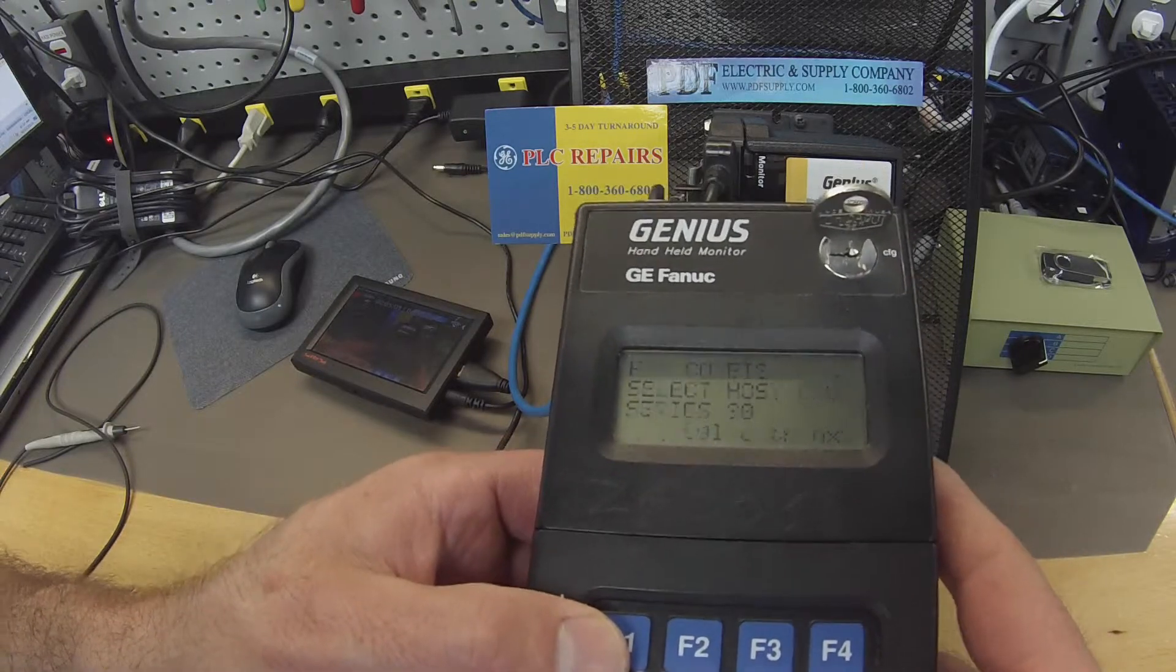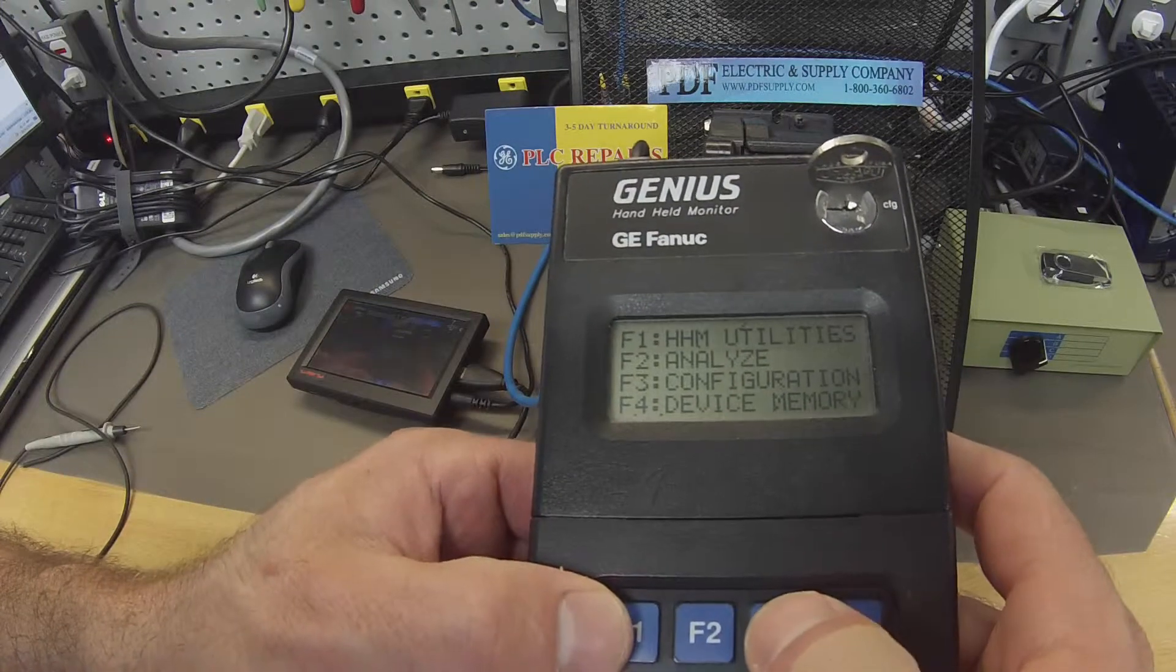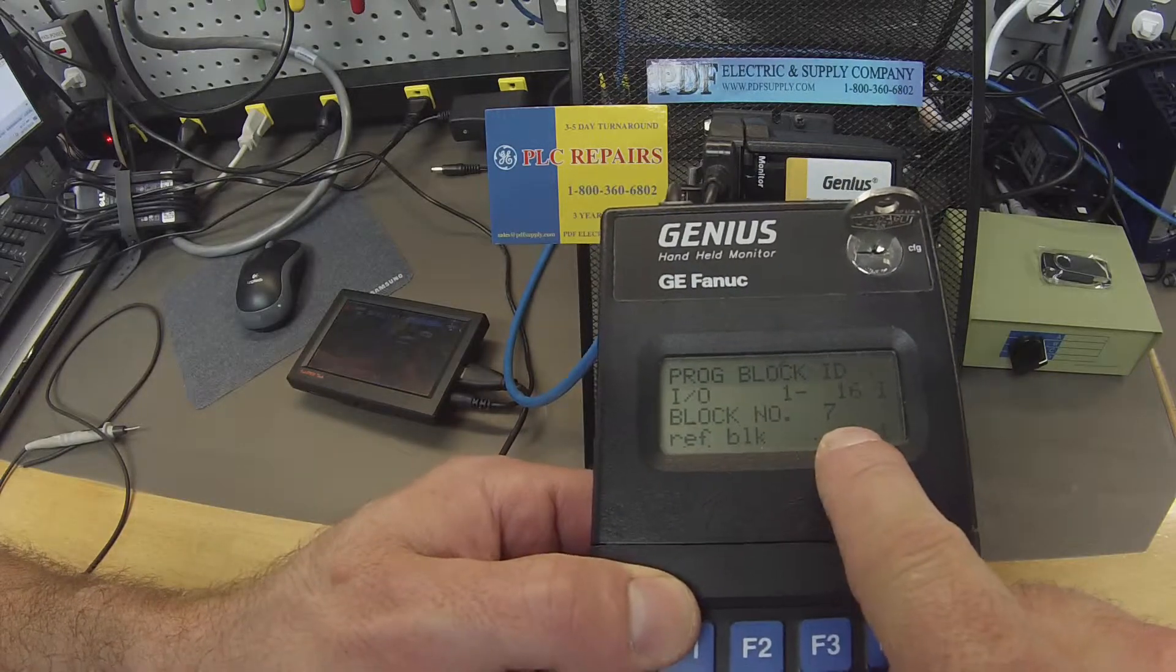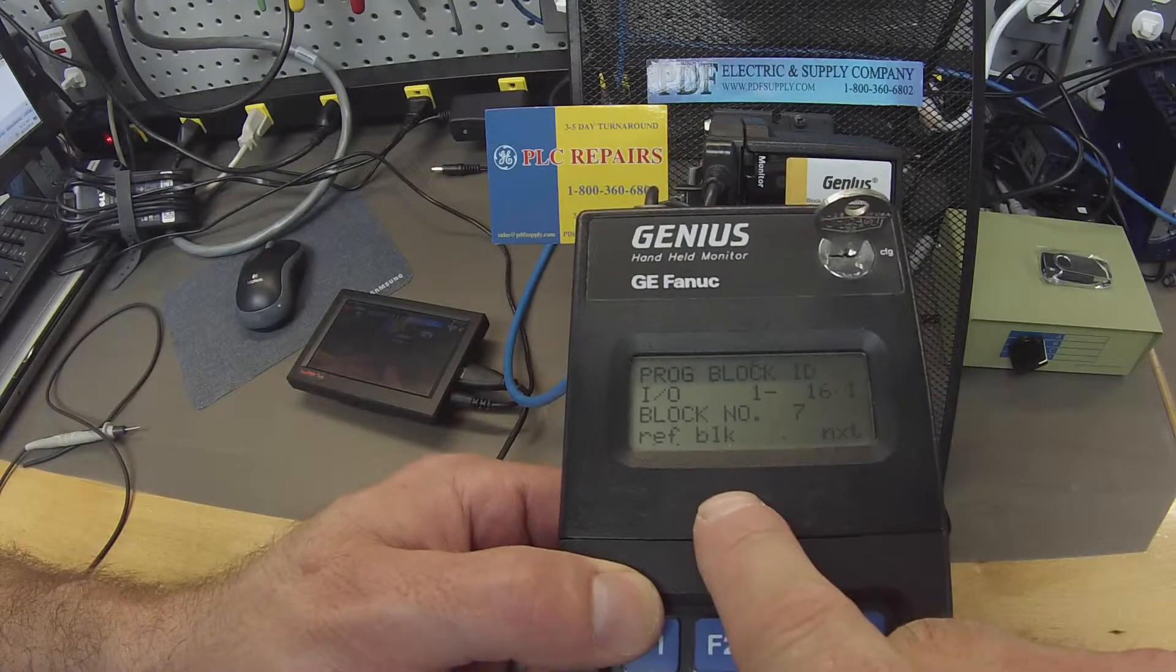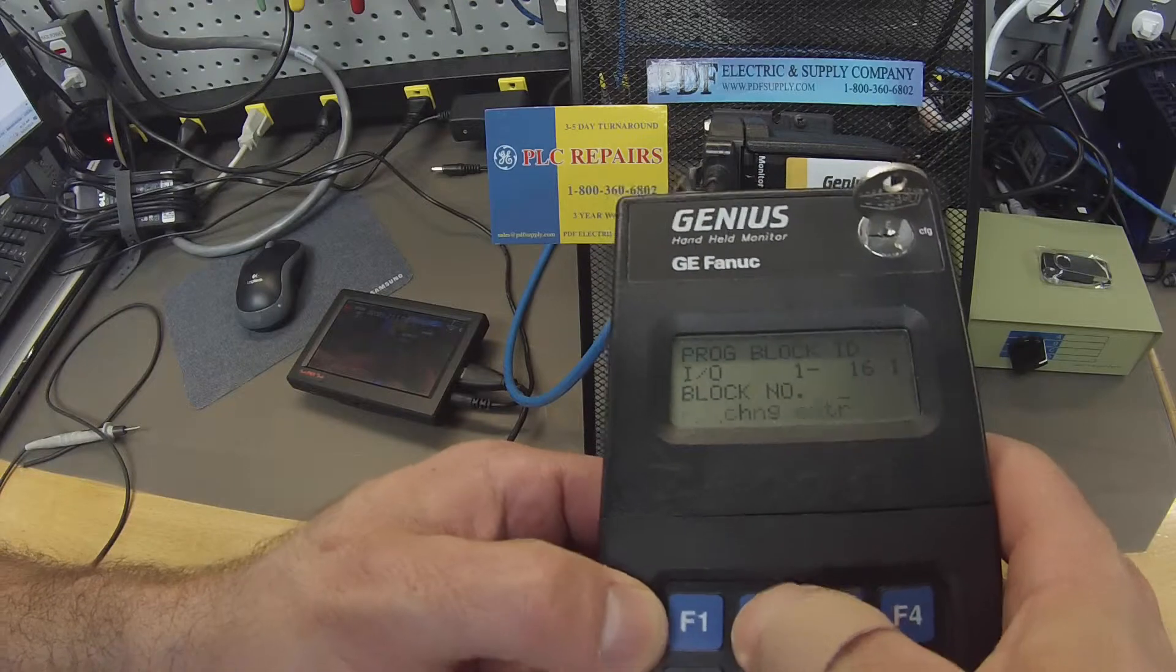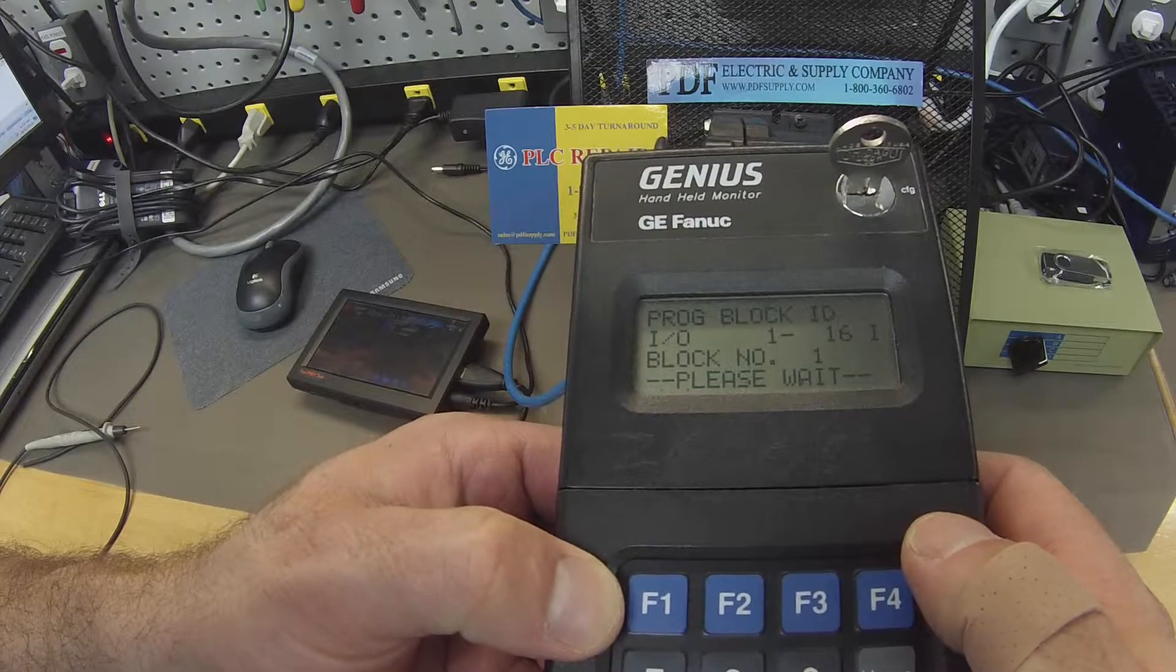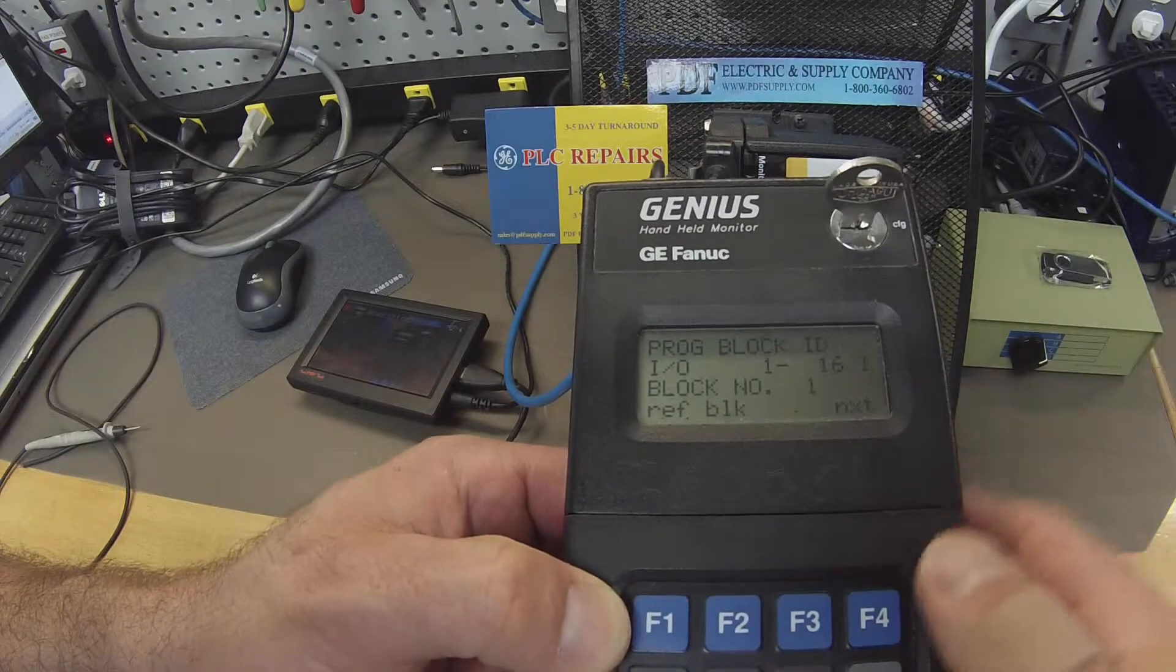I'm going to go back to home. Press home. Configuration, F3. F1, program block ID. Now, my block number is seven which does not match the block number one which is in Proficy Machine Edition. So I'm going to select block F2 and I'm going to change that to one and enter. Then once it's back to normal, it'll show you that block one is now set.